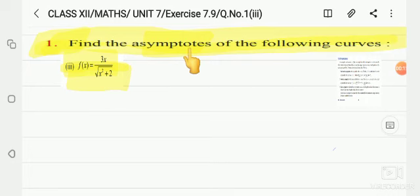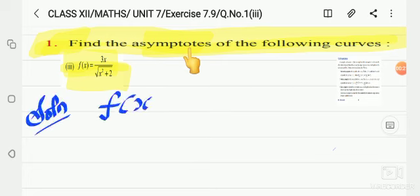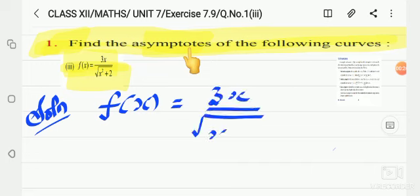So, asymptotes are of three types: vertical asymptotes, horizontal asymptotes, and slant asymptotes. First, vertical asymptotes will be obtained. Now let's see the solution. The given function is f(x) equals 3x divided by root x square plus 2. Now we'll find out vertical asymptotes.